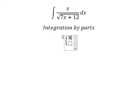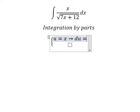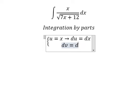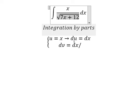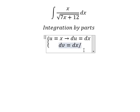I will put u equals to x. Then we need to do first derivative for both sides and we have du equals to dx. dv equals to x over the square root of 7x plus 12.